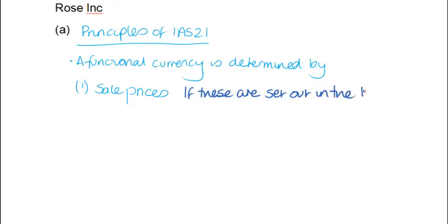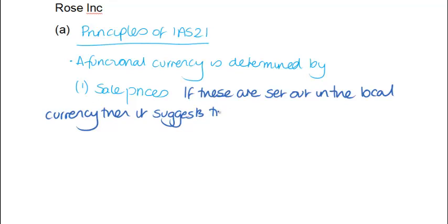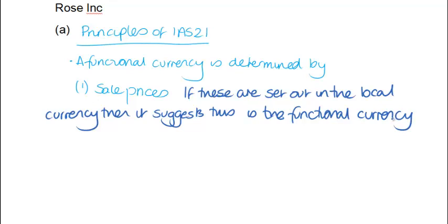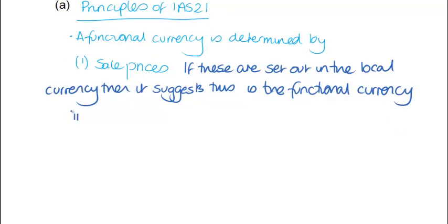Therefore, this is indicative that DINAS are potentially going to be the functional currency of STEM. If prices are set out in the local currency, it gives us evidence that this should be used as the functional currency. I'm picking this up from Note B, where it says the income of STEM is denominated and settled in DINAS, and also the output of the mine is traded in DINAS with its price determined by local supply and demand.